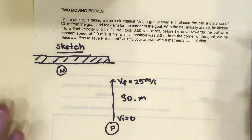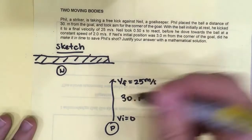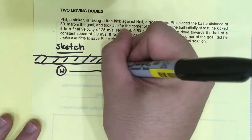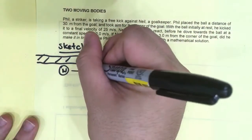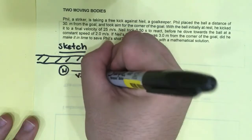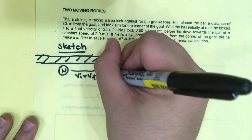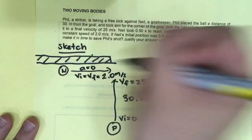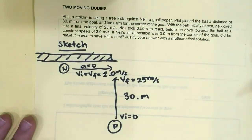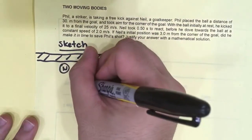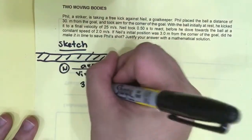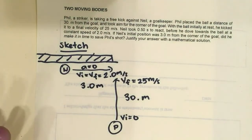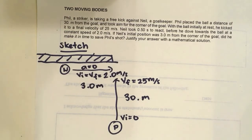Now let's see. Neil took 0.50 seconds to react before he dove towards the ball at a constant speed. So we know that it's a constant speed. Therefore, VI is equal to VF, which is equal to 2 meters per second. This also tells us that the acceleration is zero because it's a constant speed. And you know that Neil is also 3 meters from the corner of the goal because that's the width of the goal post.